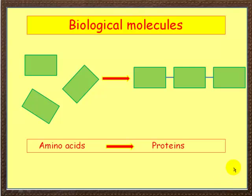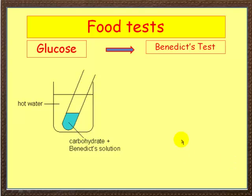Now how can we tell if these molecules are present in a food sample? Well, we can do some food tests — you need to know your food tests, so it's well worth taking a bit of time on this. First of all, how do we test for glucose? Glucose is called a reducing sugar and for that we need Benedict's test. To carry out the test, we have a boiling tube with the suspected carbohydrate and also Benedict's solution.